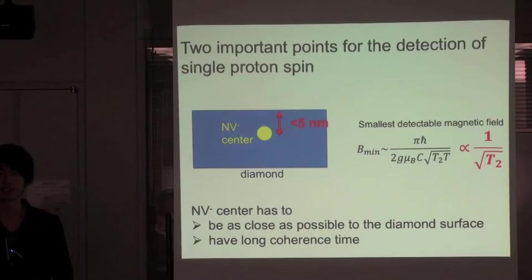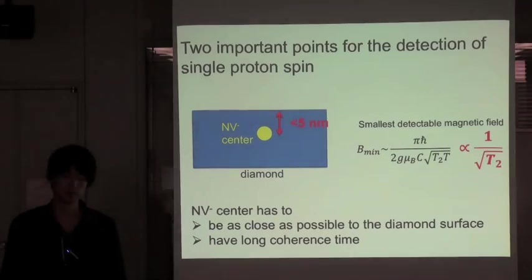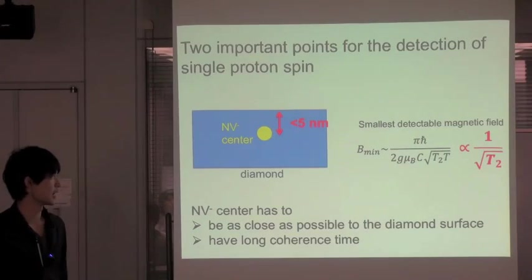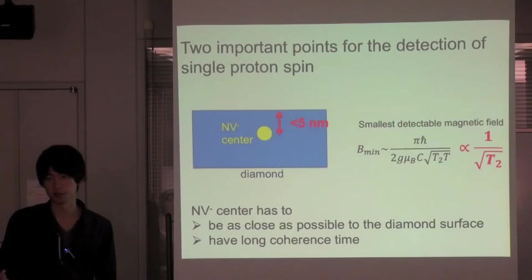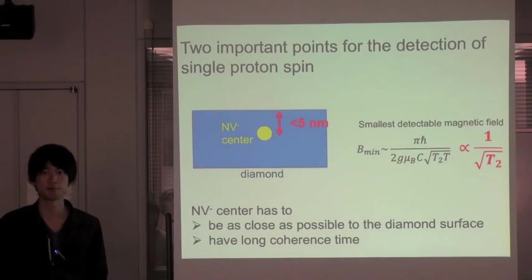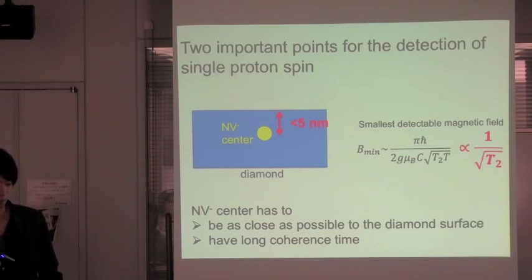In order to detect single proton spins, there are two important points. First, NV minus center has to be as close as possible to the diamond surface. It is because we need sufficient dipolar coupling between NV minus center and proton spins.